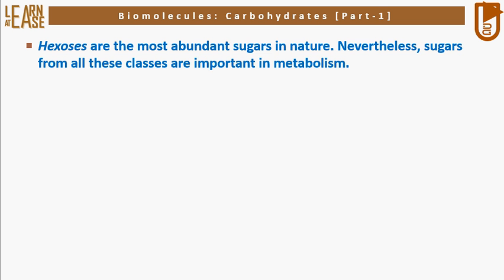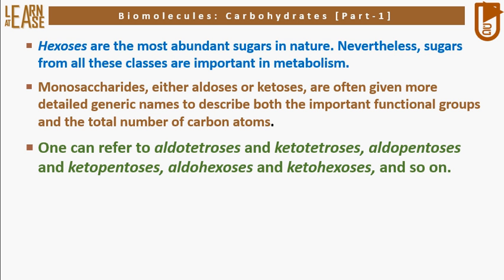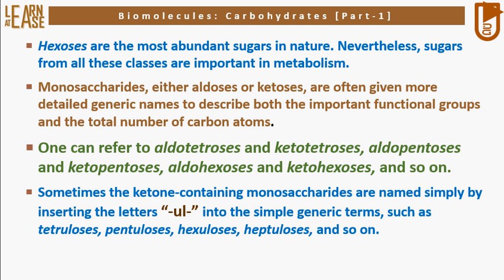Hexoses are the most abundant sugars in nature; nevertheless, sugars from all these classes are important in metabolism. Monosaccharides, either aldoses or ketoses, are often given more detailed generic names describing both the important functional groups and the total number of carbon atoms. One can refer to aldotetroses and ketotetroses, aldopentoses and ketopentoses, aldohexoses and ketohexoses, and so on. Sometimes ketone-containing monosaccharides are named by inserting the letters 'ul' into the simple generic terms, such as tetruloses, pentuloses, hexuloses, heptuloses, and so on.